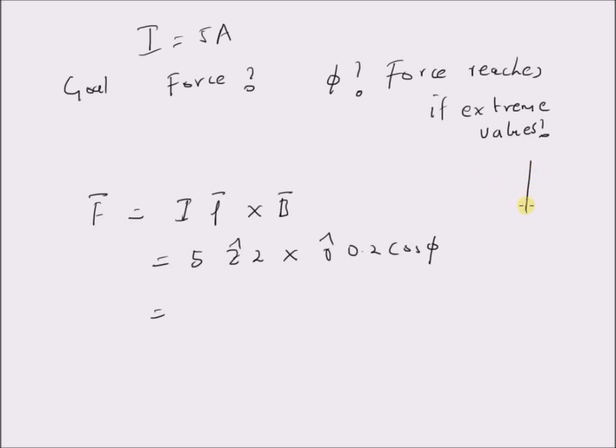Since the cross product of z cap with r cap is clearly phi cap, because this is z cap, this is r cap, the cross product should be phi cap. That is the unit vector that continuously changes along the tangent.